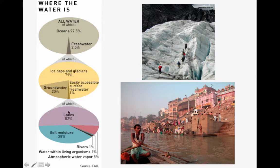Rivers also account for only 1% of that fresh water. So really, it is a fraction of a fraction of a fraction — the water we have available to use, to drink, and to properly water our crops. That is why water pollution is such a huge issue that we always need to keep in mind.